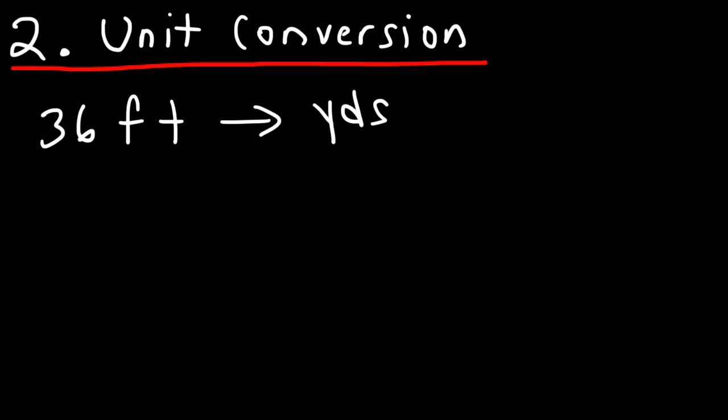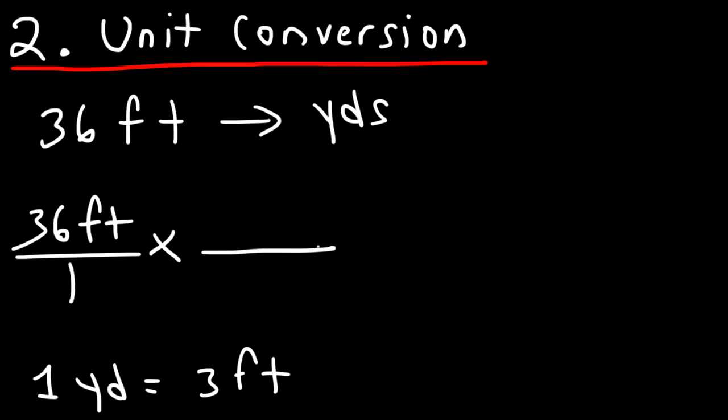Well, first you need to know the conversion factor, and that is one yard is equal to three feet. And once you have that, you can now convert it. So starting with 36 feet, always start with what you're given. And then in the next fraction, you want to write down your conversion factor. Now because we have the unit feet on top, in the second fraction, we need to put the unit feet on the bottom so that these units will cancel. And thus the unit yards will go on top.